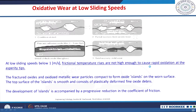At low sliding speeds — below 1 meter per second — the frictional temperature rises are not high enough to cause rapid oxidation at the asperity tips. Fractured oxides and oxidized metallic particles compact to form oxide islands on the worn surface. The top surface of these islands is smooth, consisting of plastically deformed fine oxide debris. Development of such islands is accompanied by a progressive reduction in the friction coefficient at low sliding speeds.